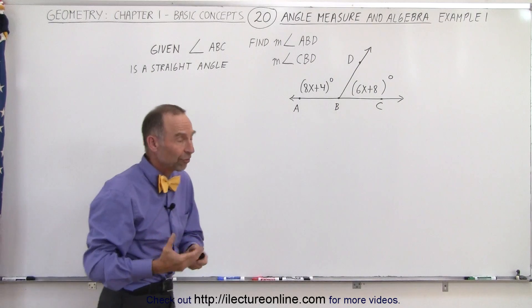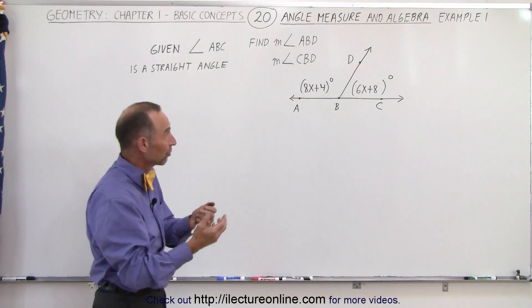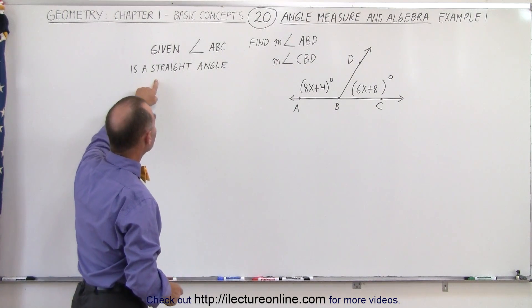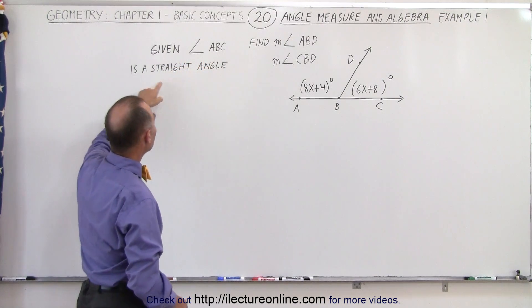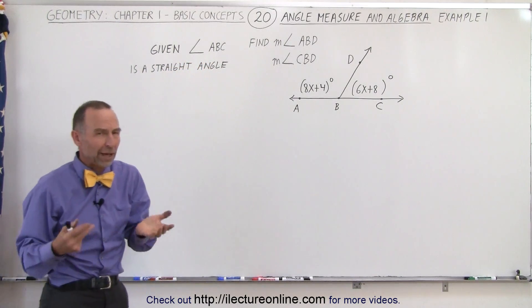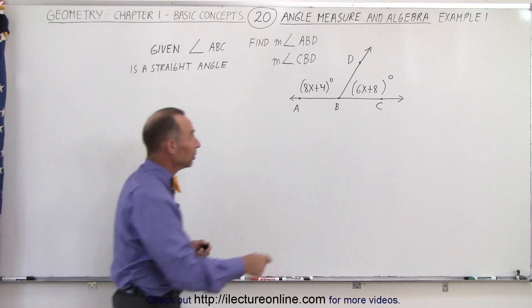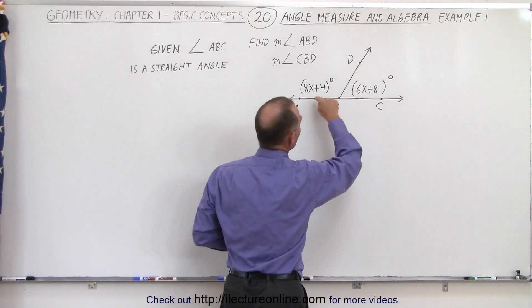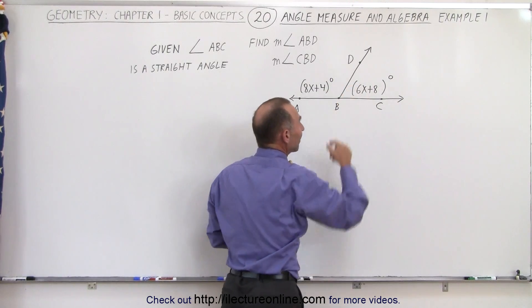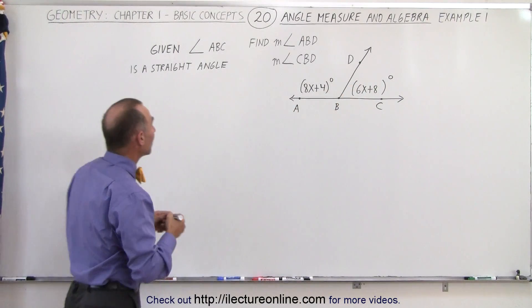Now they're asking us to find the actual measure in terms of degrees given that the angle ABC is a straight angle. So we have to understand what they mean when they say the angle ABC is a straight angle, and that would be this angle right here. That indicates that is 180 degrees.